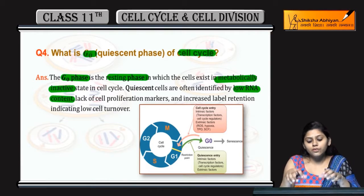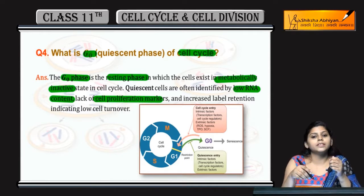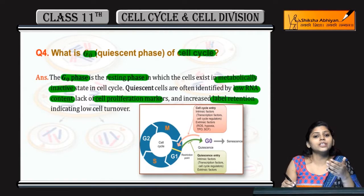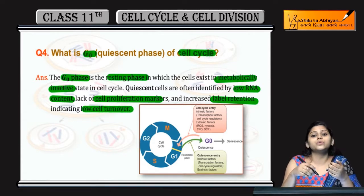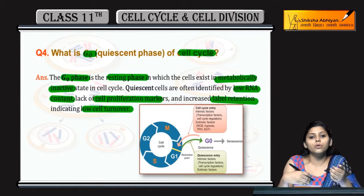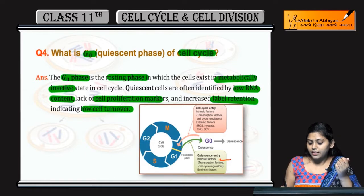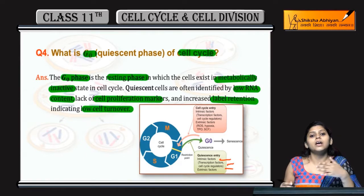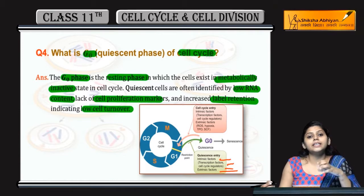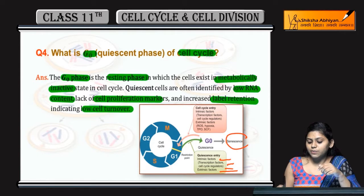Cell proliferation markers are absent. Increased label retention indicates that cell turnover is low. Intrinsic factors — transcription factors and cell cycle regulators — as well as extrinsic factors are involved. If these factors are absent, the cell will go to senescence.